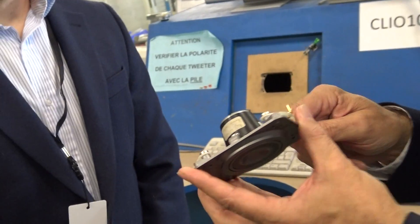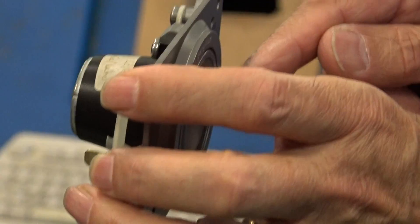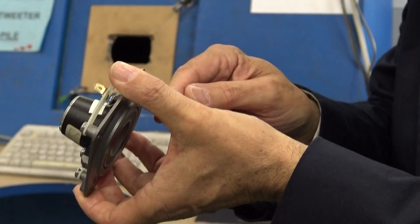As you can see, it's totally open on the back. So there is absolutely no compression on the back of the dome and on the back of the suspension.